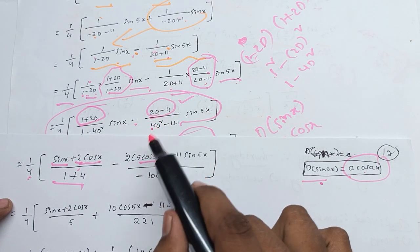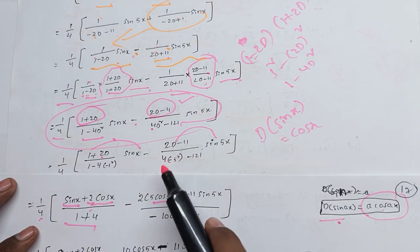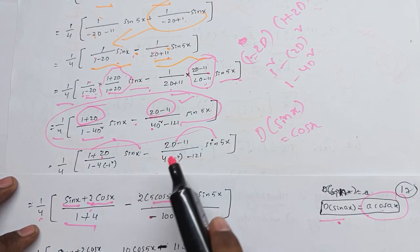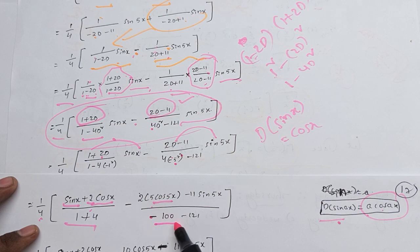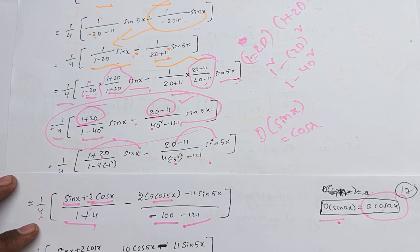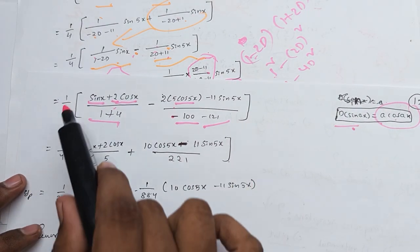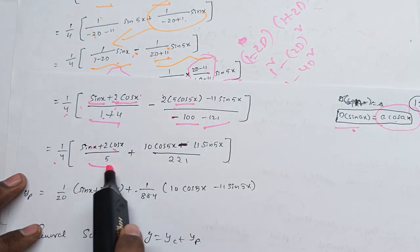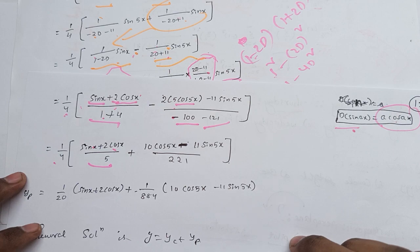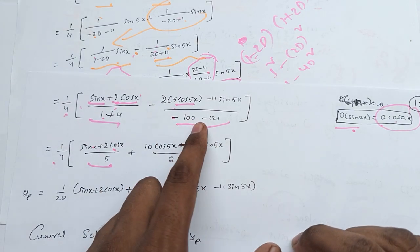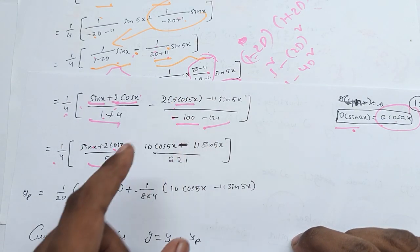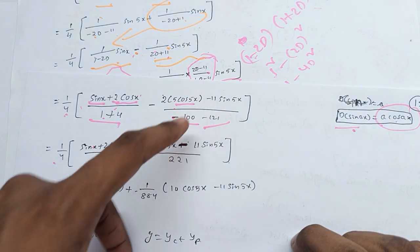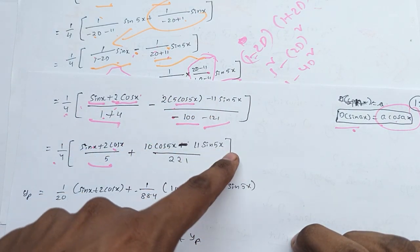So 4 minus 4 minus 25 equals minus 25. 1 plus 4 equals 5. Then 1 by 4 gives sin x, 2 cos x. Minus 1 plus sin: 2 into 5 equals 10, so 10 cos 5x, minus 11 sin 5x.